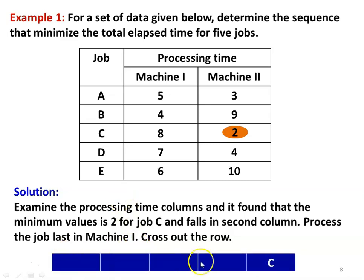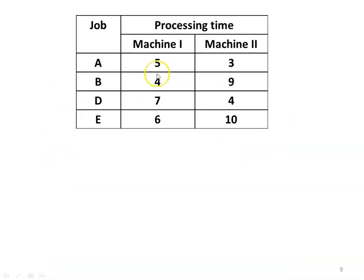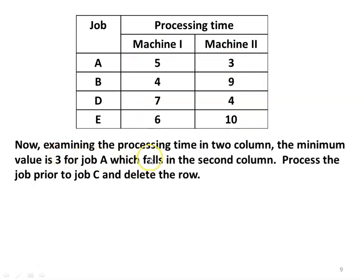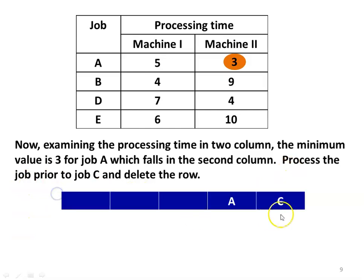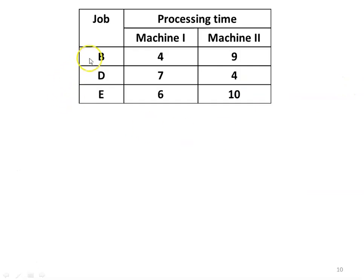We remove row C. With the remaining 4 jobs, the minimum time is 3 for job A, which again falls in the second column — so job A is processed prior to C (second from last). After removing row A, we examine the remaining 3 jobs. The minimum time is 4, appearing for job B in column 1 and job D in column 2. Since B's 4 falls in column 1, B is processed first; since D's 4 falls in column 2, D is processed prior to A and C.